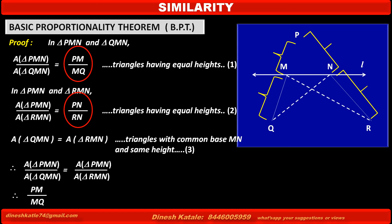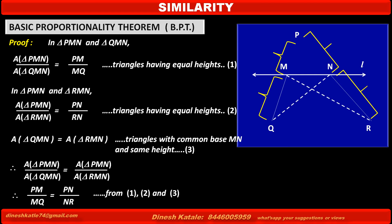So, the right-hand side ratio of Statement 1 — PM upon MQ — is equal to the right-hand side ratio of Statement 2 — PN upon NR. Hence, the Basic Proportionality Theorem is proved. Thank you.